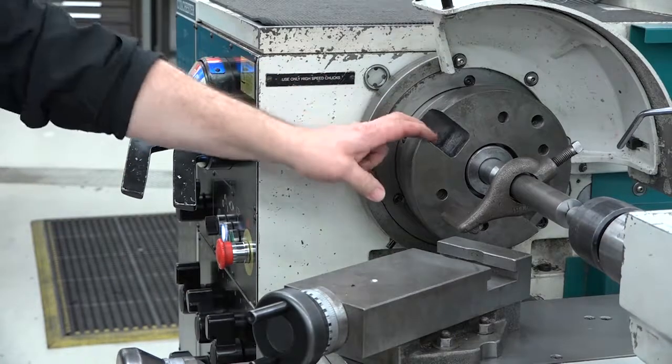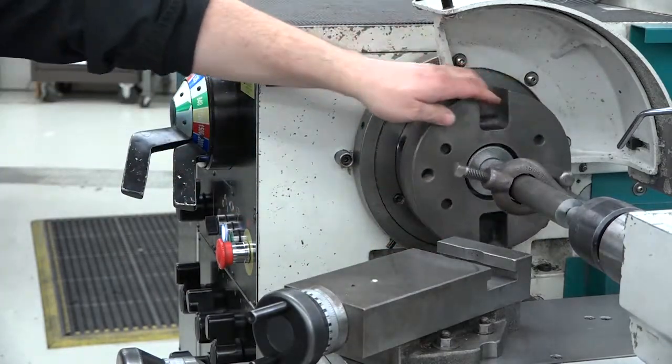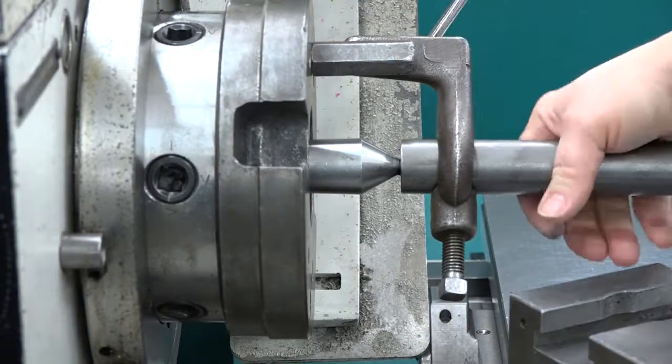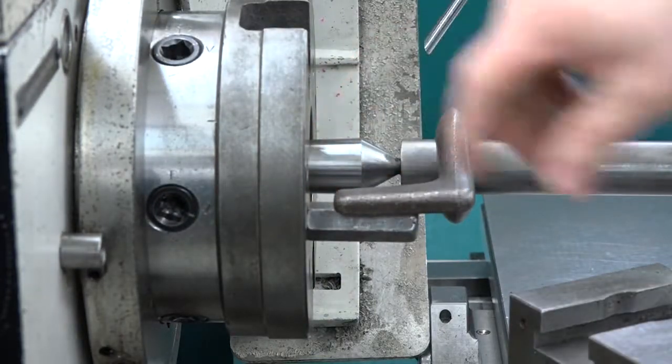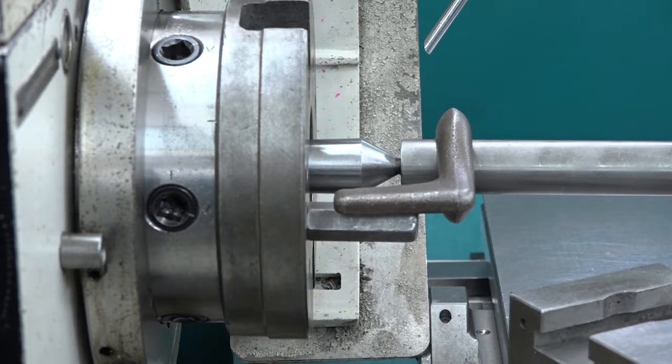Place the spindle in neutral. Slowly turn the spindle. The lathe dog will move in and out because the tailstock is offset. Make sure there is adequate clearance for the tail of the lathe dog.